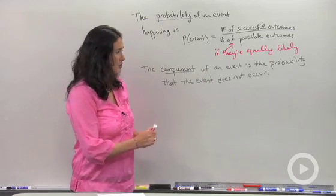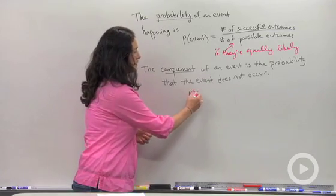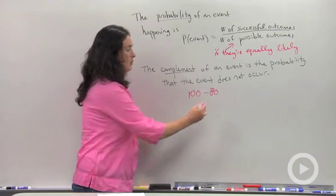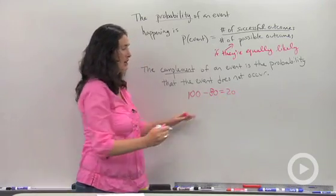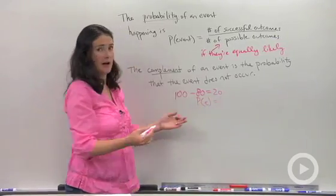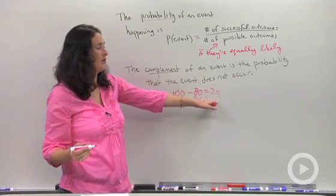The way you find it out is by doing 100% take away the percent of your event. That will give you the complement. That's what we did in our situation. 100 take away the probability of that event equals the probability that the event does not happen or the complement.